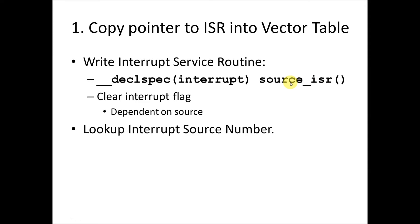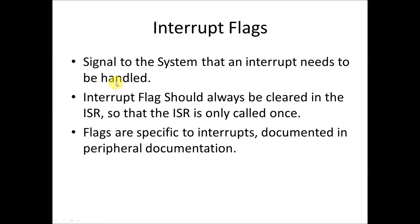RTI pops things off a different stack — remember the stack where we saved our bookmark for where we were executing? That stack is separate from our normal stack, so it uses that stack to return instead. Inside the interrupt service routine, the very first thing we have to do is clear the interrupt flag. This is dependent on the source. The interrupt flag is a single bit in a register that signals to the system an interrupt needs handling. It must always be cleared in the ISR so the ISR is called only once — if we don't clear it, the interrupt will be triggered again and again forever.